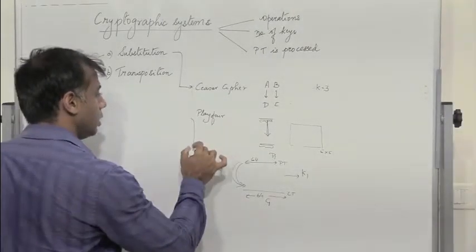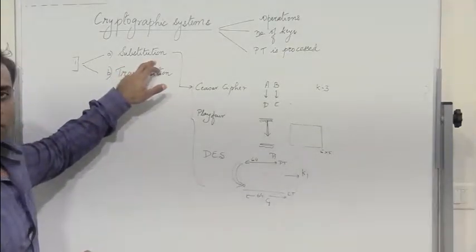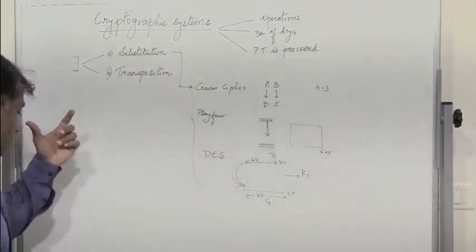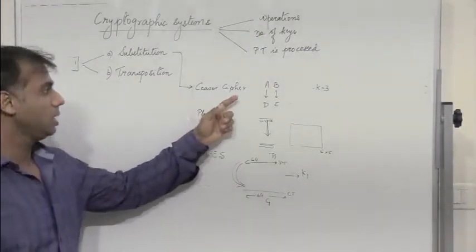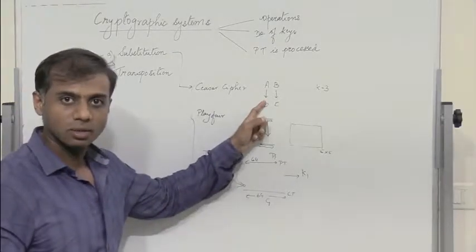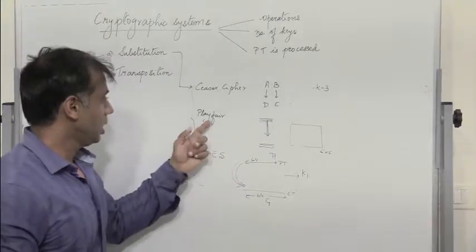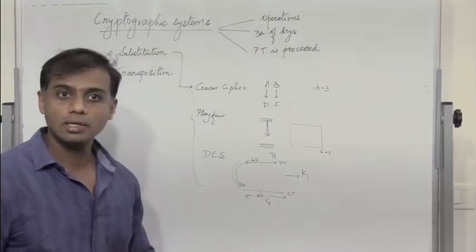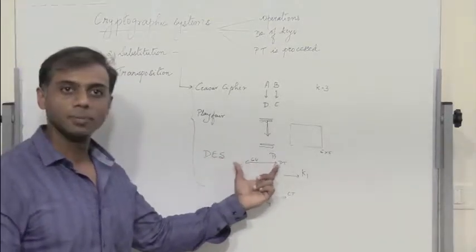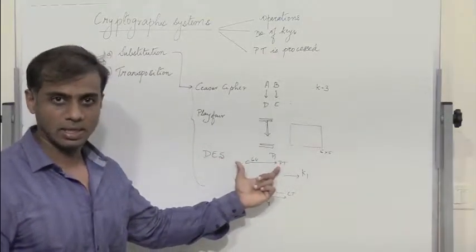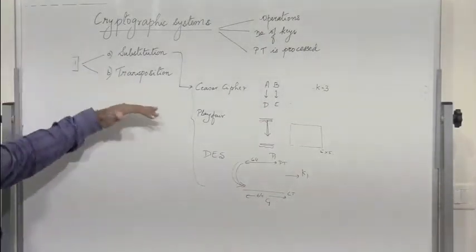All these methods fall under the category of substitution, where an element of plain text is mapped to another element of cipher text. It may be single alphabets or characters, two or three alphabets — in Playfair we have two, in Hill cipher it can be two, three, four and so on, and in DES a 64-bit plain text is substituted with another 64-bit cipher text. This is substitution cipher.